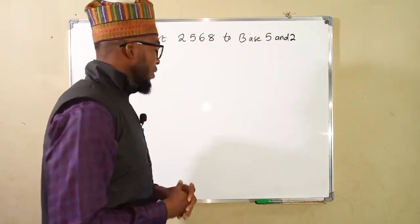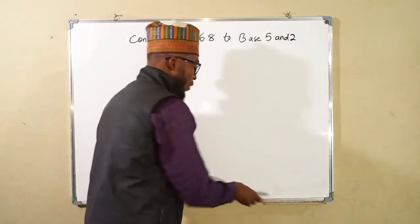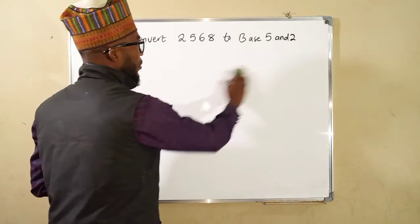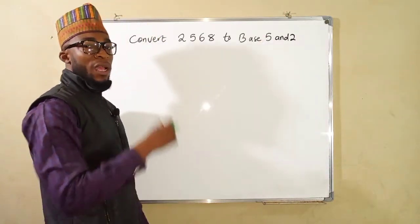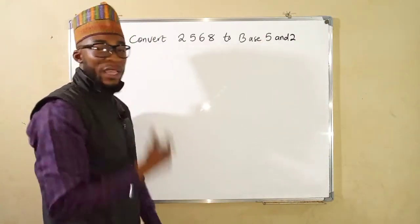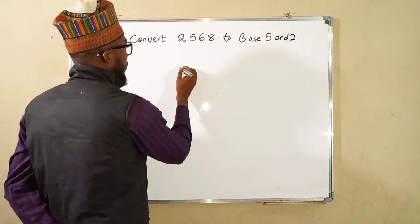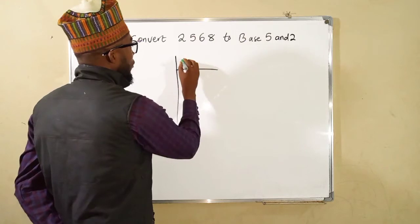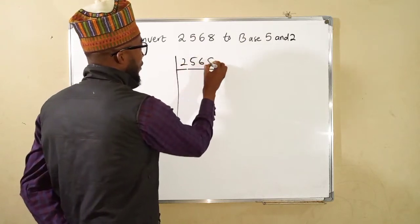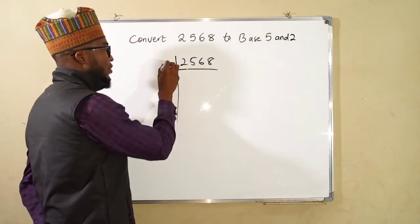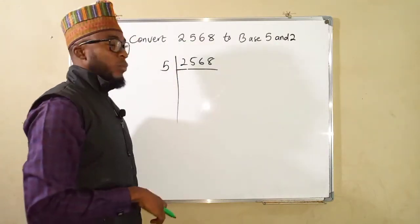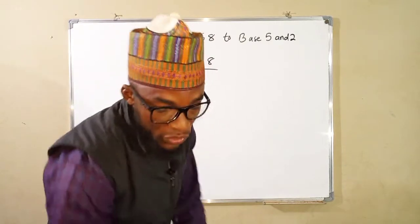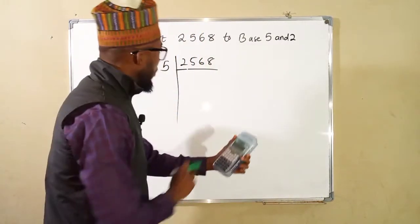To start with base 5 we are going to perform a successive division of this number with 5 and obtain the remainders in their descendant order. So this is 2,568. We are going to divide through by 5, for convenience we can use calculator. So this is my calculator.